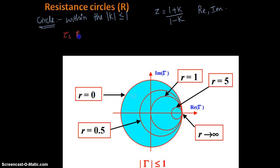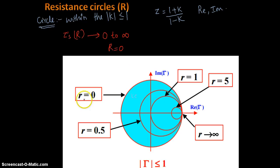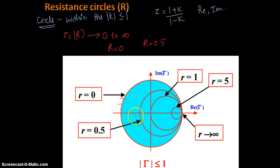You can see a family of circles within the |k| equal to 1 plane. The values of Z — the R value — can take anything between 0 to infinity. If R is equal to 0, it is represented by the outermost circle, and any point on that circle represents a resistance value of 0. If R equals 0.5, that is the 0.5 circle, and anywhere on it the resistance value is 0.5. Similarly, there is the R equals 1 circle, R equals 5 circle, and the point at the far right of the Smith Chart gives a resistance value of infinity.